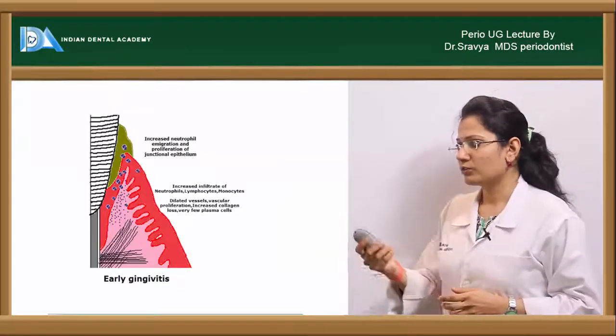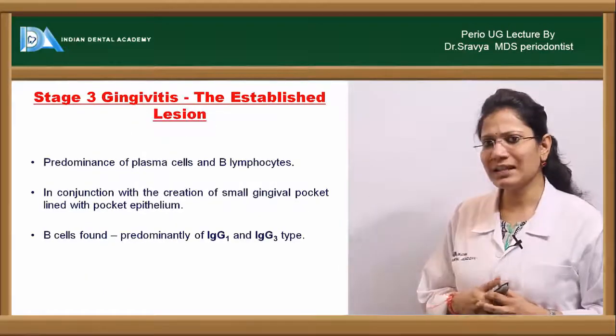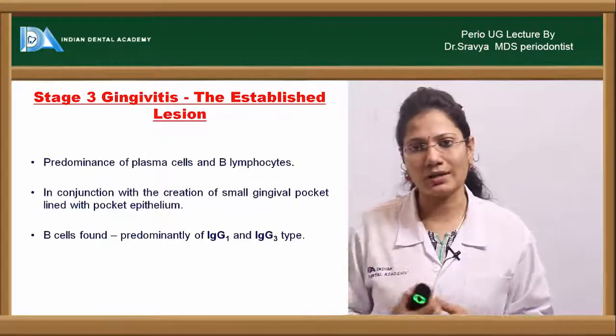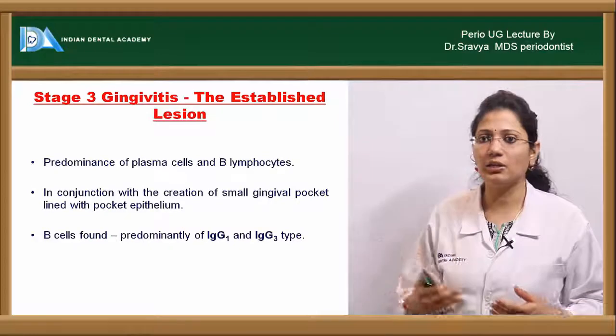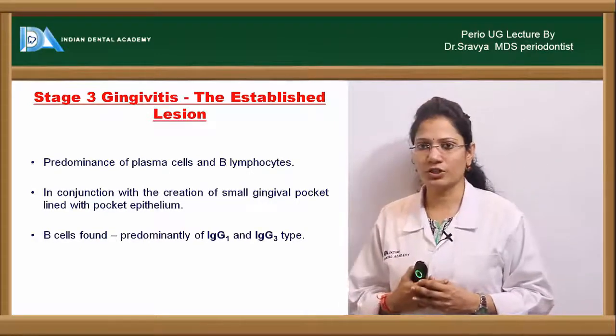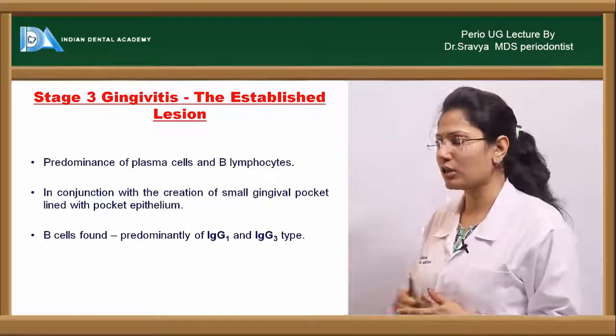The junctional epithelium gets densely infiltrated with neutrophils, and the amount of collagen fiber destruction increases — 70% of the collagen is destroyed around the cellular infiltrate. If plaque is still allowed to accumulate, it will evolve to the next stage of gingivitis: the established lesion.